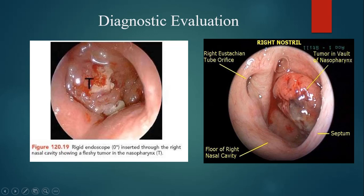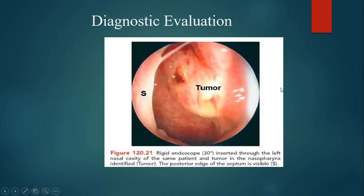You can also see in this endoscopic view that this is the tube orifice and this is the tumor bulk which is present in the nasopharynx. Here you can also see that the tumor is present inside the nasopharynx.